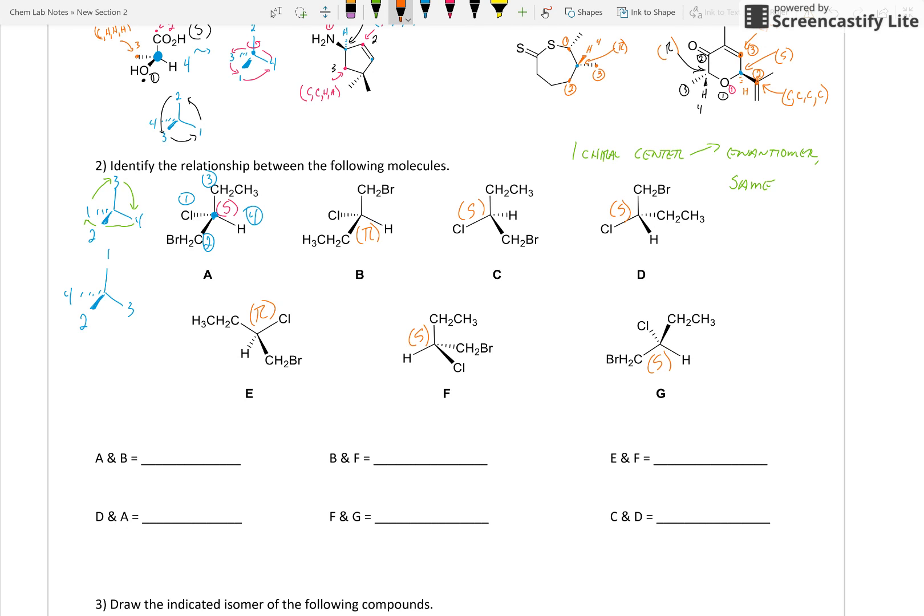Great, we've assigned R and S. Now we just go through and answer: what's the relationship of A and B? Well, A is S, B is R - enantiomers. But wait, Dr. H, these aren't mirror images the way they're drawn. Right, it's just the way they're drawn at the moment. They're not drawn as mirror images, but if you have one chiral center and one is S and the other's R, they have to be enantiomers. So B and F, R and S, enantiomers. E and F, R and S again, enantiomers.